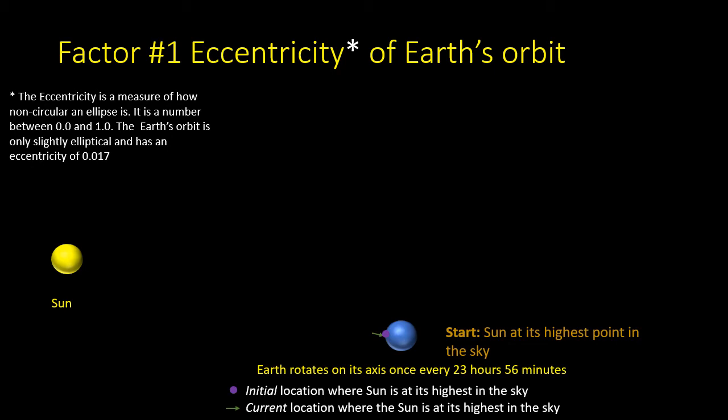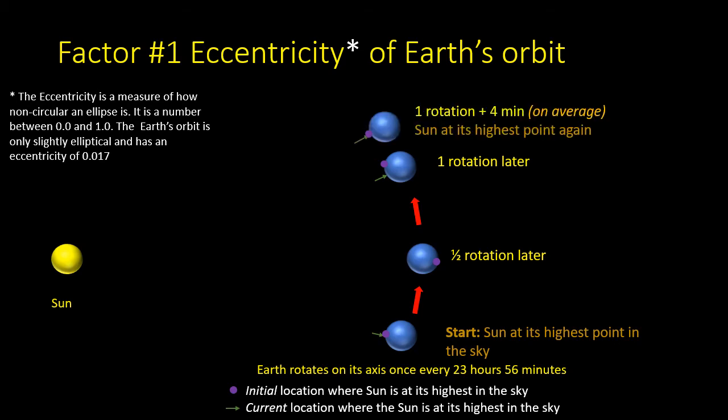The Earth takes 23 hours and 56 minutes to make a complete rotation on its axis; however a solar day is on average 24 hours long. This is because during the time it has performed one rotation, the Earth has moved around the Sun a little in its orbit. If we take the point where the Sun is at its highest in the sky, marked with a purple dot, then one rotation later, because the Earth has moved along in its orbit, the Sun isn't overhead at that point. It takes an extra 4 minutes for the Earth to rotate further to reach the point where the Sun is once more at its highest, and that's why a day is on average 24 hours.